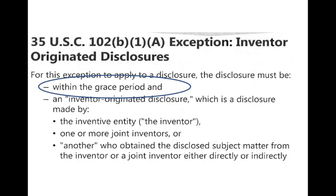Let's look at exceptions — go back to USC 102, paragraph B, number 1, under A. Exception B1A: disclosure made one year or less before the effective filing date, where the disclosure was made by the inventor, joint inventor, or another who obtained the subject matter directly or indirectly from the inventor or joint inventor. All this stuff in B1A comes from the inventor. For this exception to hold, that disclosure has to be made within the grace period — if it's before the grace period, the exception is no good. It must come from the inventor or somebody who got it from the inventor.